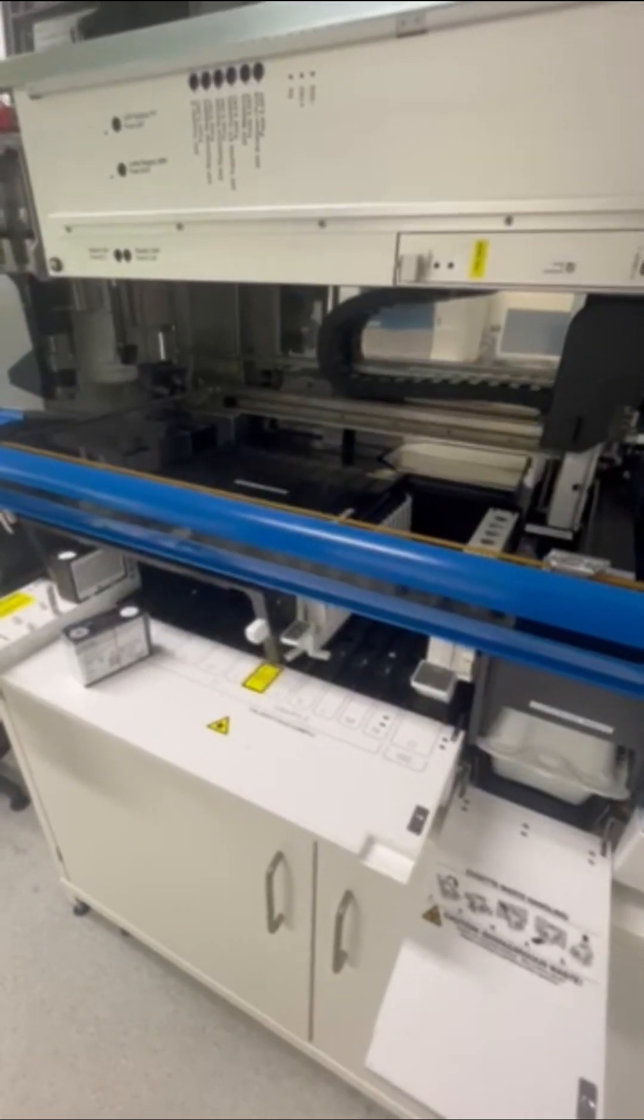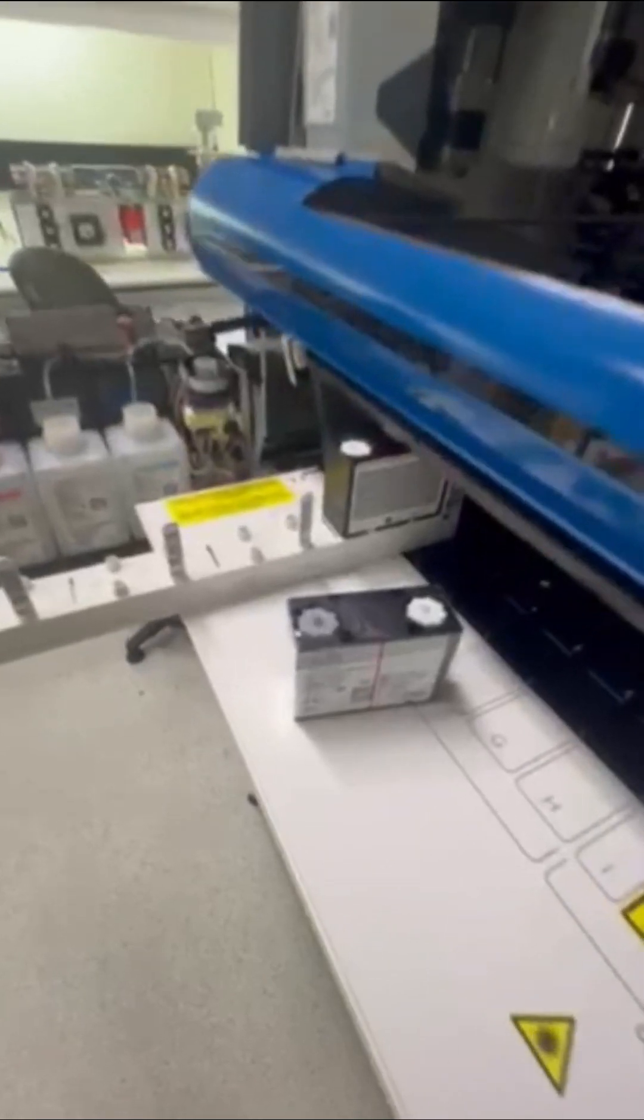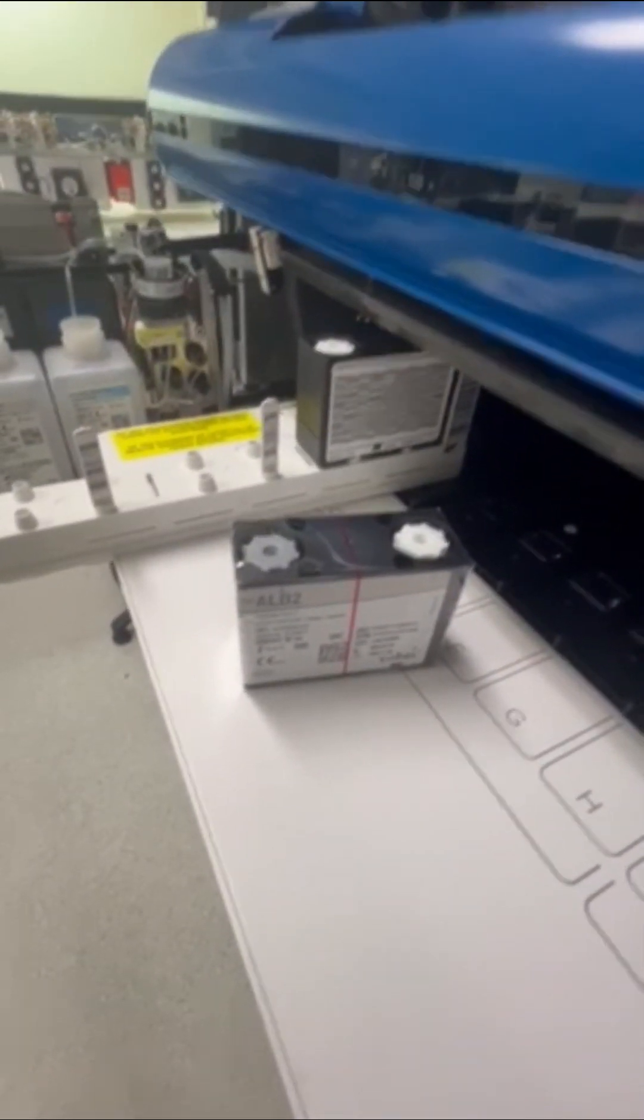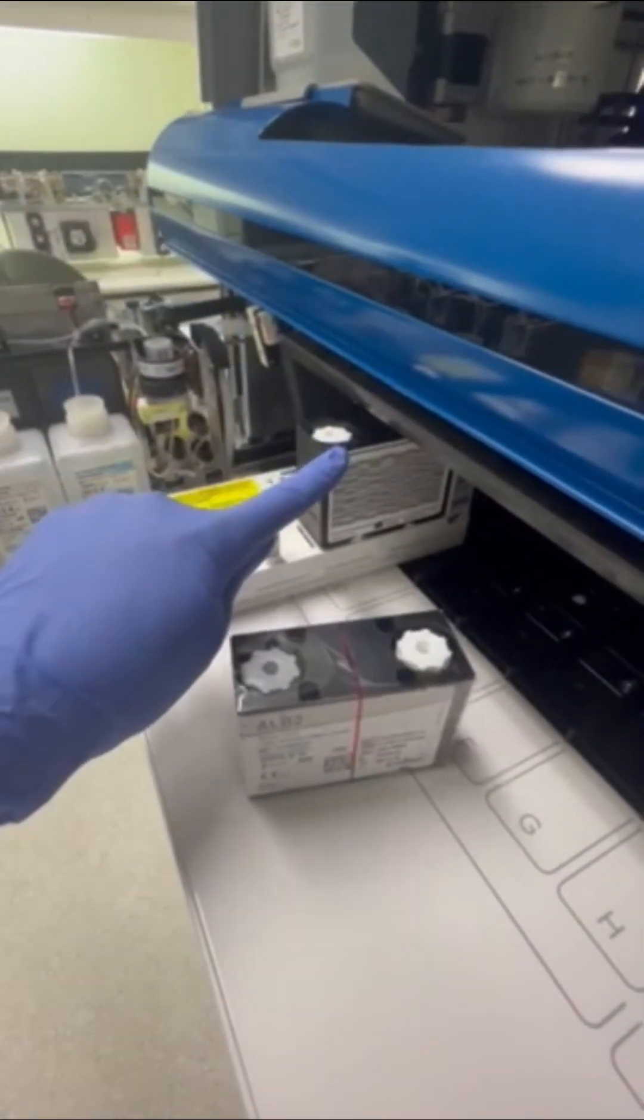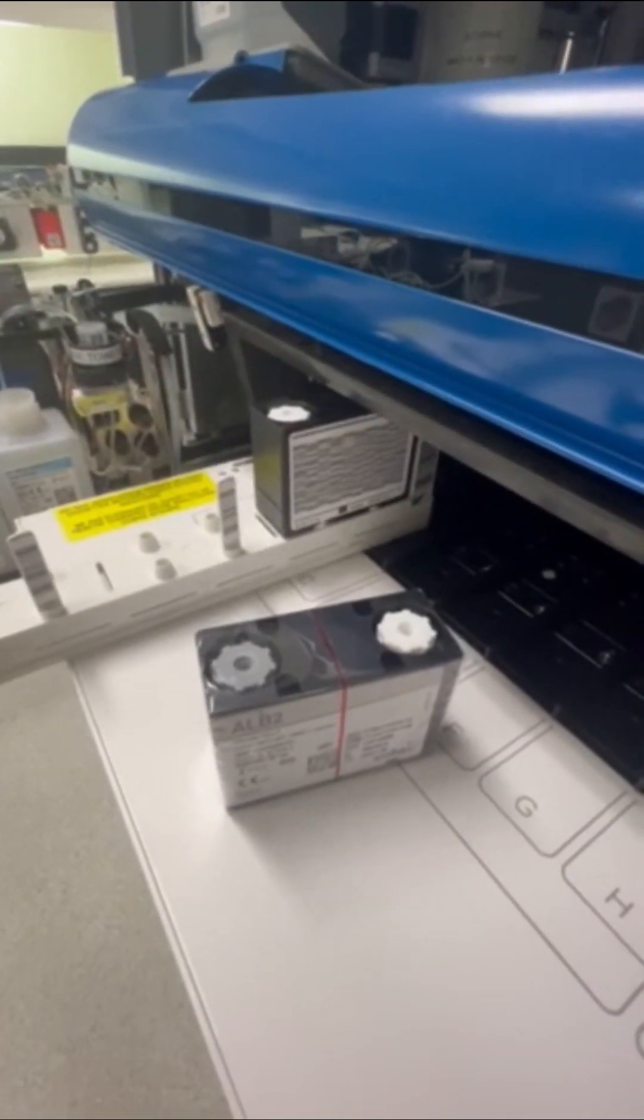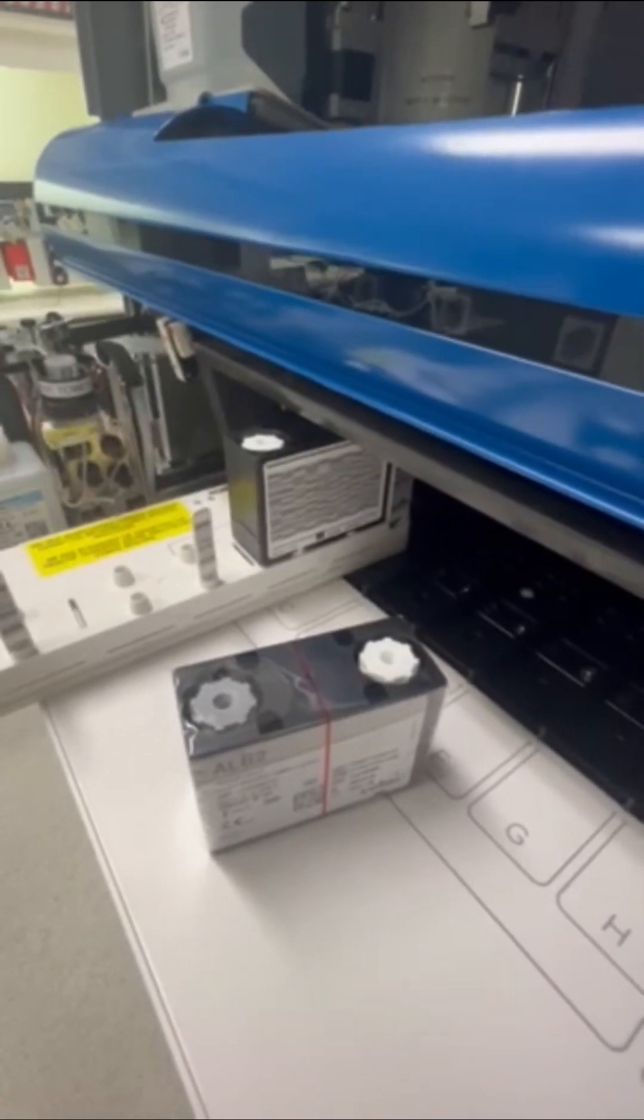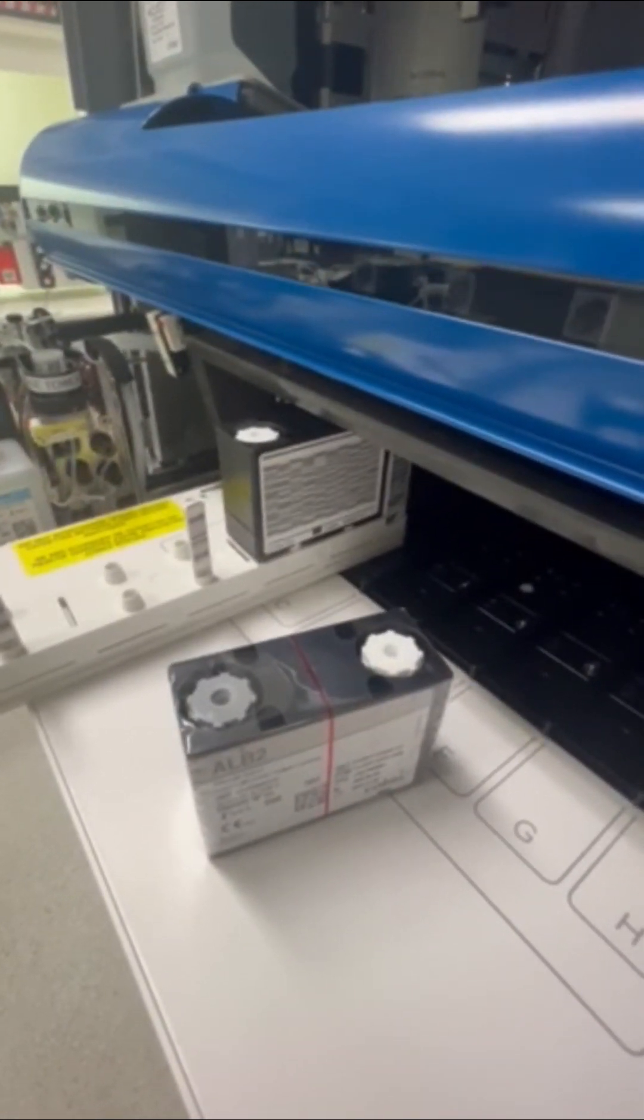Now that our patient sample has been loaded onto the machine we have to load on our reagent. Today we are using albumin as an example. Our cartridges all have a barcode on the back which tells us how much patient sample is required for that test, how much reagent is required and how long incubation needs to be. This is all read by the Integra.